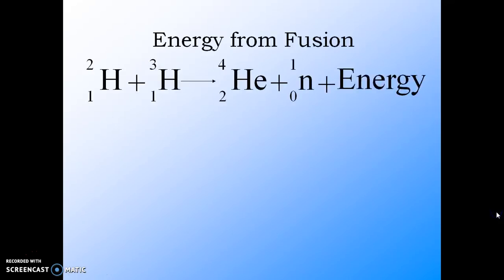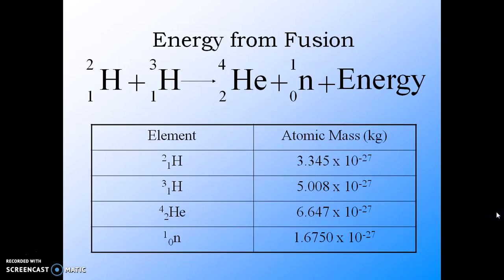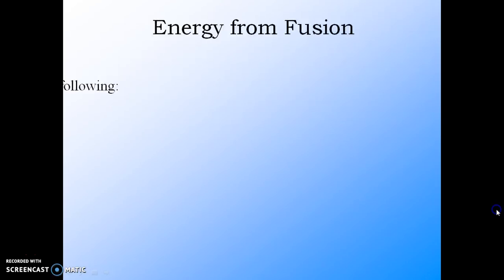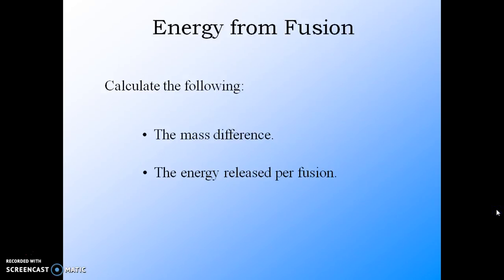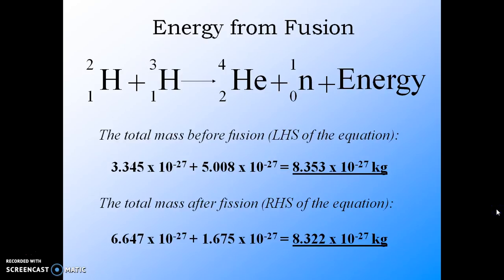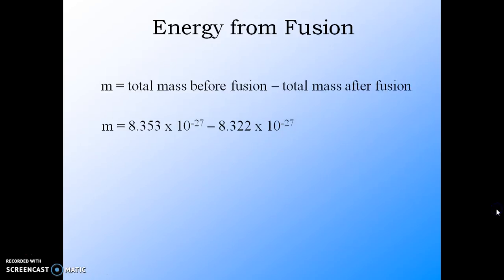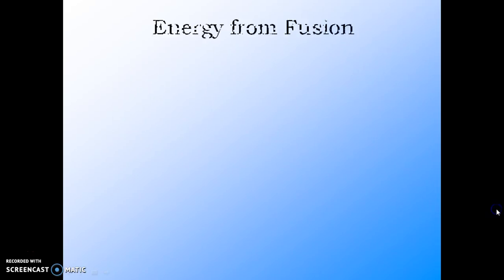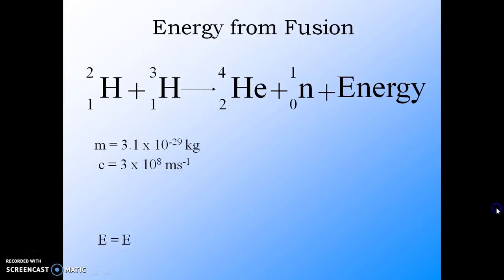Now we calculate energy released in fusion. We use the same method, that is mass defect. These are the masses of reacting and product particles. We calculate the mass difference and then we calculate energy released for fusion. The total mass before fusion is 8.353 × 10^-27 kg. After fusion it is 8.322 × 10^-27 kg. We see it is less, so that's the mass difference. The mass difference comes out to be 3.1 × 10^-29 kg, and now we calculate the energy, which comes out to be 2.79 × 10^-12 joules.